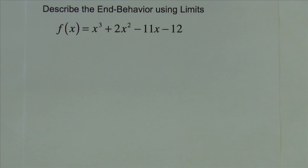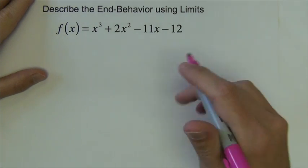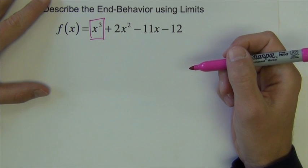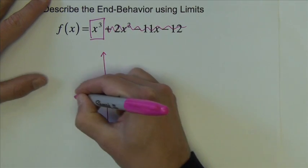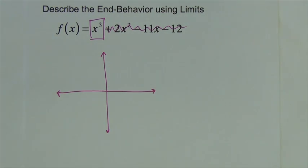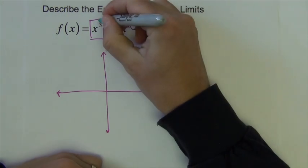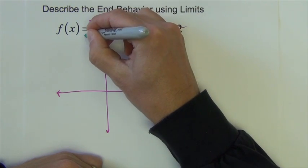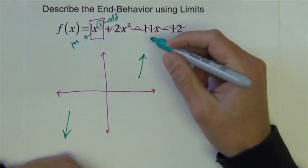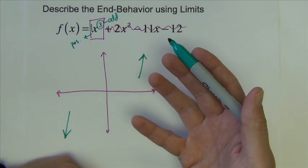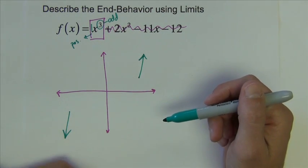What we'd like to do is determine the end behavior of a function without looking at its graph, and the leading coefficient test tells us all we need to know. The end behavior of a function is controlled entirely by the highest-powered term — we just look at that and ignore the rest. So if we have x to the third, we determine: is it even or odd? Is it positive or negative? Third power is odd, with a coefficient of one, so it's positive. Odd and positive means it goes down on the left and up on the right.